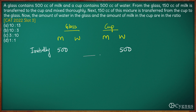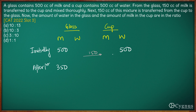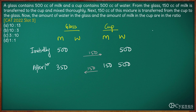Once 150 cc is transferred, after the first transfer, 150 cc of milk is transferred from the glass — there is no water in the glass initially. So milk remaining in the glass will be 500 minus 150 = 350 cc, and the cup will have 150 cc of milk and 500 cc of water. Now, if we transfer 150 cc from the cup back to the glass, what fraction are we transferring? We are transferring 150 cc out of a total of 650 cc, which comes to 3/13.